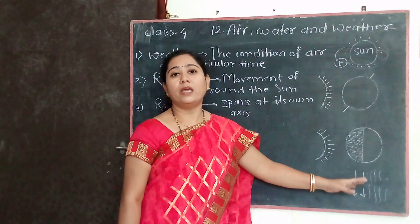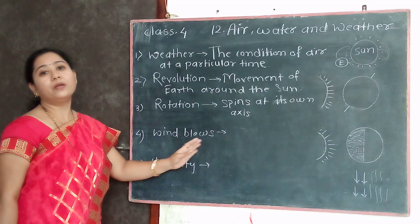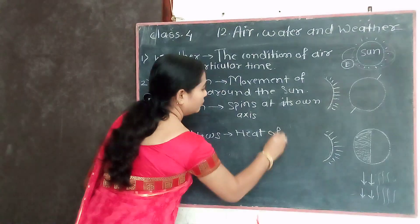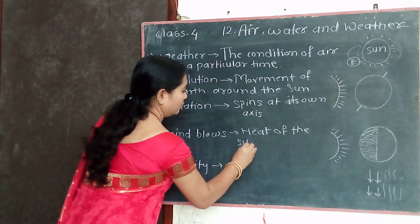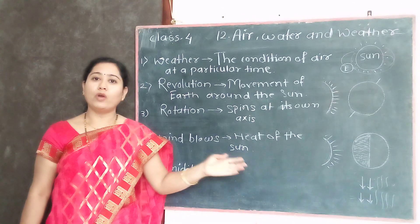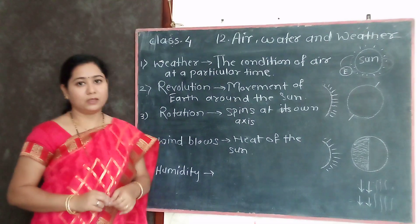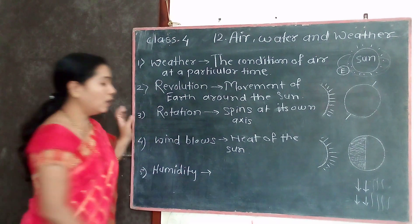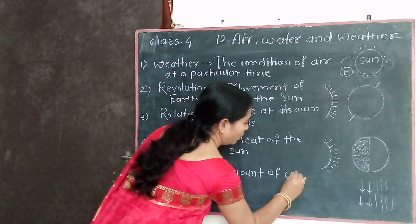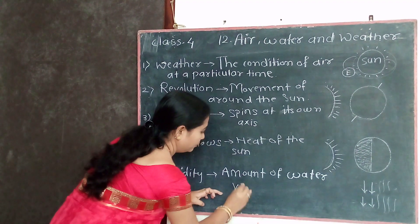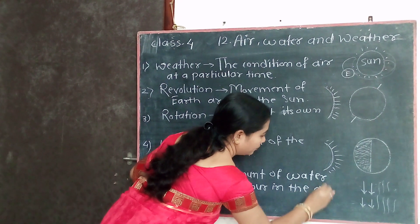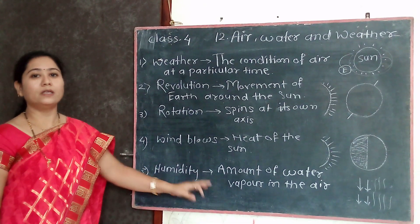Thus, the up and down movement of air causes wind to blow. Because of the heat of the sun, wind blows. In air, water is available in the form of water vapor. Humidity is defined as the amount of water vapor in the air.